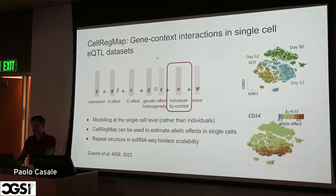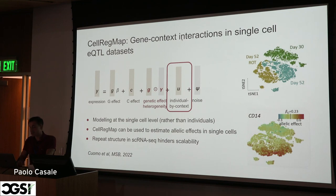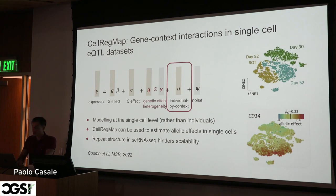This is an extension of the StructLMM model to single-cell eQTL mapping — follow-up work from Oliver Stegle's group. In this extension, instead of modeling at the single-individual level, you do modeling at the single-cell level. You can use CERREG map to estimate allelic effects in single cells, identifying in which cells the genotype variant is most active.